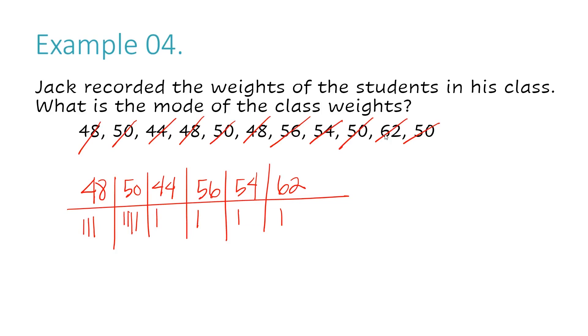So I can see very clearly with my tally system that I have more 50s than anything else—one, two, three, and four 50s. So the mode for example number four is 50 because it's the number that's listed the most often.